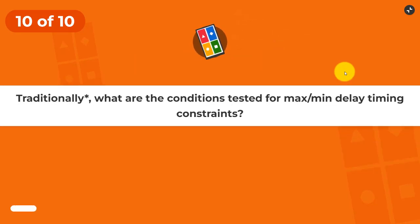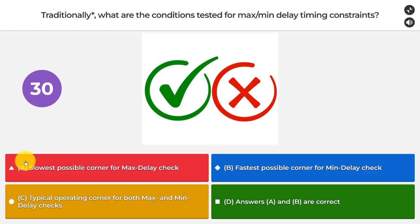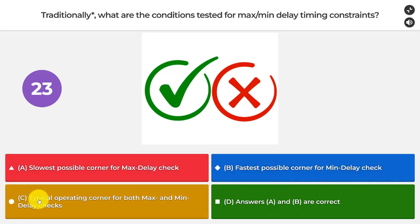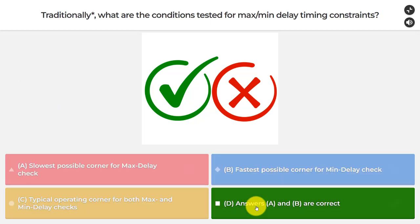Question number ten: traditionally, what conditions are tested for max and min delay timing constraints? The slowest possible corner for max delay check. The fastest possible corner for min delay check. Typical operating corner for both. Or answers A and B are correct. The answer is D — answers A and B are correct.